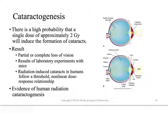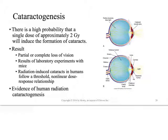Let's talk about cataractogenesis. There's a high probability that a single dose or repeated doses of radiation could create cataracts in the eye. The eyes are among the most radiosensitive organs of the body - any good radiation therapist or CT technologist should know that, since we scan in the area of the eye quite a bit. The result would be complete or partial loss of vision. Initial results came from experiments on laboratory rodents but we've also seen it among people occupationally exposed to fluoroscopy.